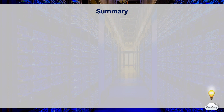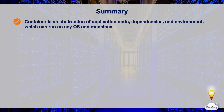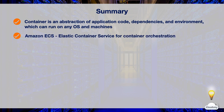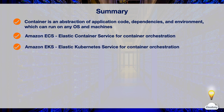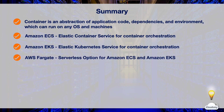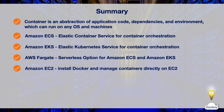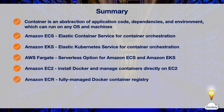In this episode, we've learned about different container services on AWS. A container is a software abstraction that packs up application code, dependencies, and environment so it can run on any operating system. AWS offers ECS — a highly scalable managed container orchestration service; EKS — a managed orchestration service for Kubernetes; Fargate — a serverless option for ECS and EKS; and ECR — the container registry for hosting and deploying images. That's all for AWS Container Services. Thanks for watching and see you in the next episode.